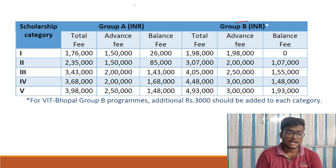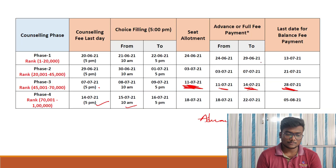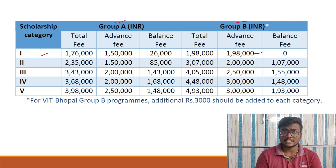Now coming to advance fee details — if you got allotted in CSE or its branches, that falls under Group B, while Biotechnology, Chemical, and Civil come under Group A. Group A has less fee compared to Group B. If you got allotted in Category 1, the total fee is ₹1,98,000 — that is your advance fee — and your balance fee is nothing. So before the 14th, if you pay ₹1,98,000, your admission will be confirmed.